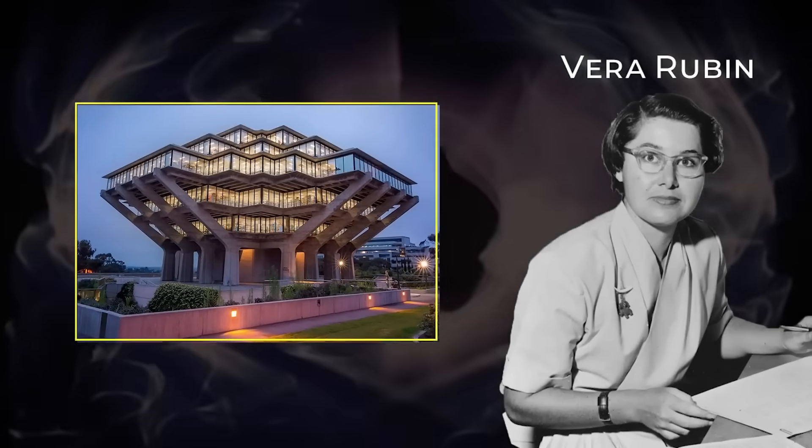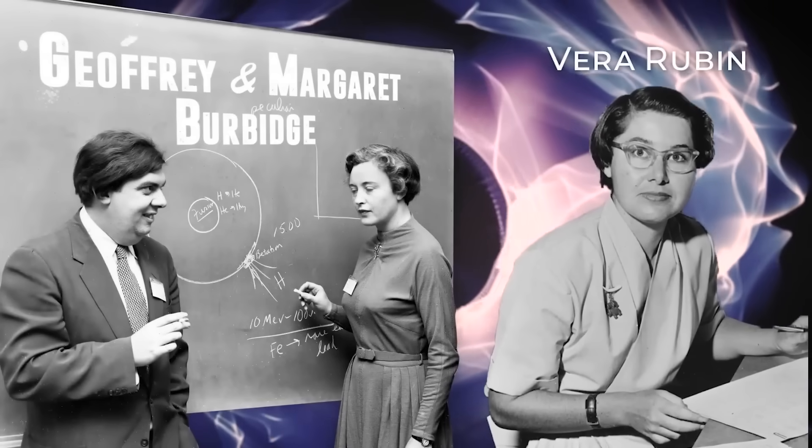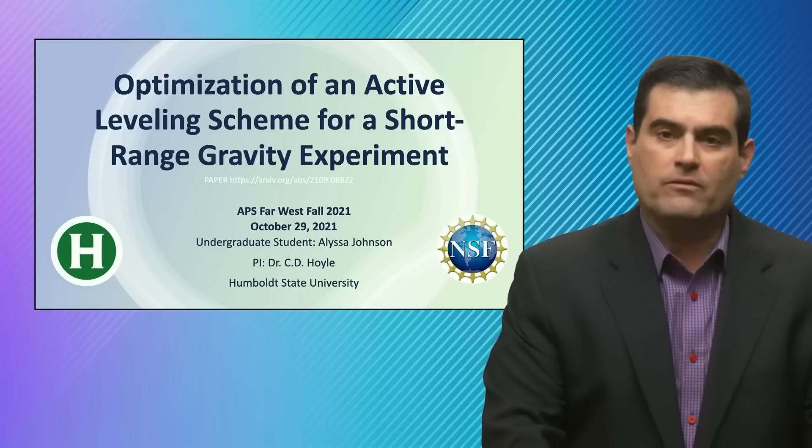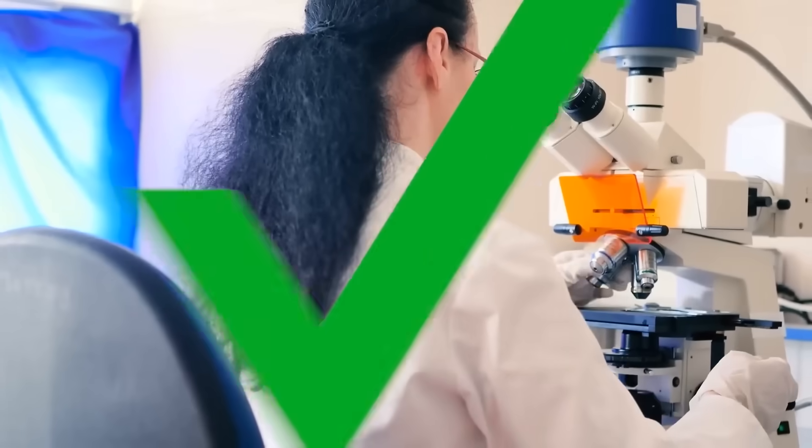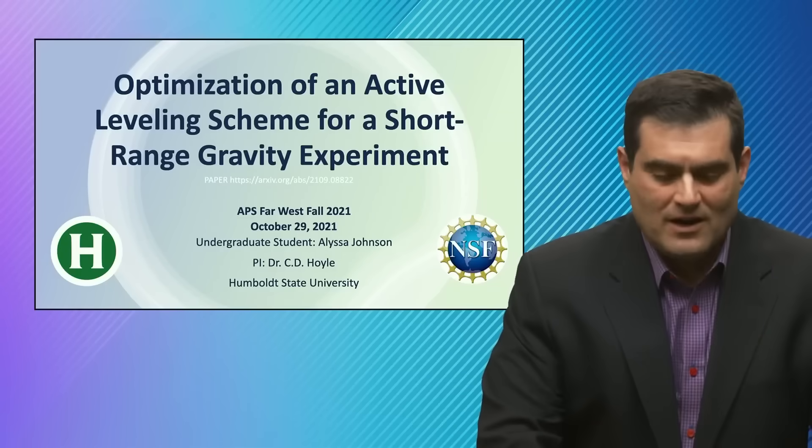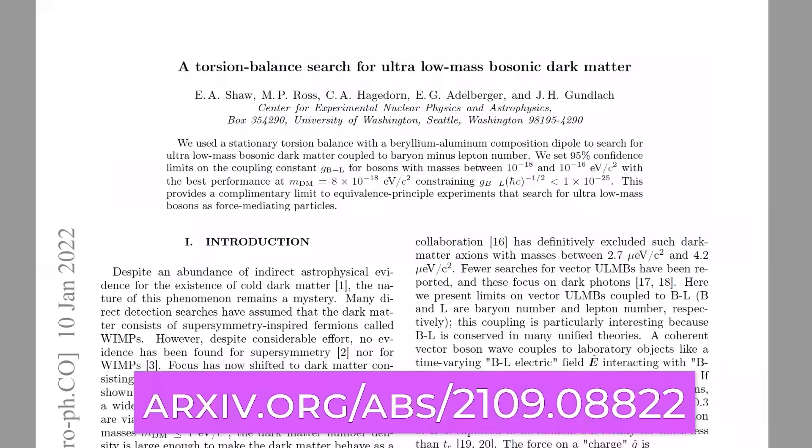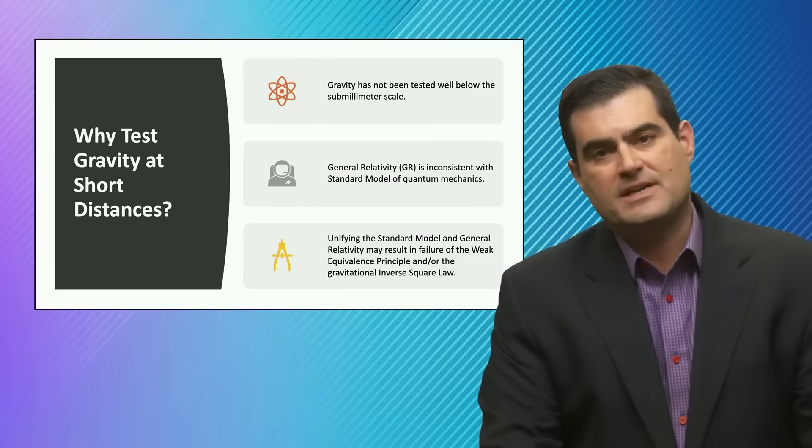Vera Rubin was trained right here at UC San Diego by my late great colleagues Margaret and Geoffrey Burbidge. But this is about a short-range gravity experiment, not on galaxy scales but on laboratory scales. Results are described in this paper which you can find for free in the archive.